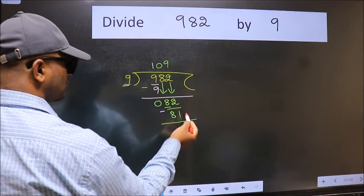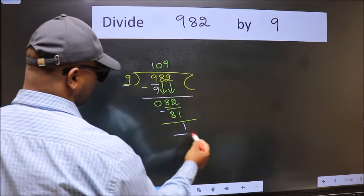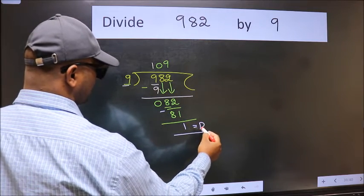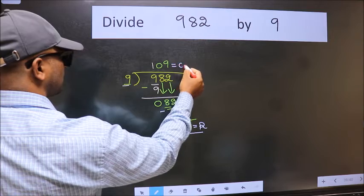No more numbers to bring down. So we stop here. This is our remainder and this is our quotient.